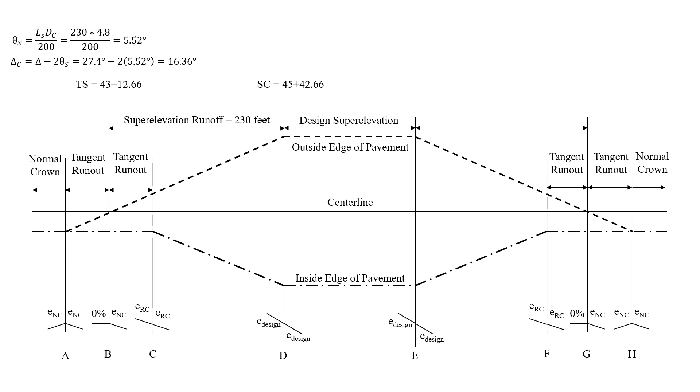That's 16.36 degrees. Now, we can use that to find our length of our circular curve, 100 times 16.36 degrees divided by 4.8 degrees gives us a length of our circular arc of 340.83 feet.